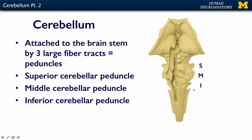On this next slide, you can see the peduncles a little more clearly, as this is a rubber brain stem — a super large image of the whole brain stem. Here we can see, again, the medulla, the pons, and the midbrain, and we can see our superior peduncle, our large middle peduncle, and our smaller inferior peduncle.